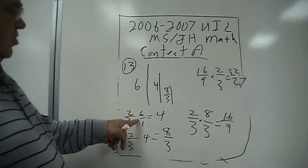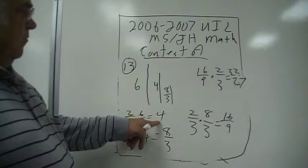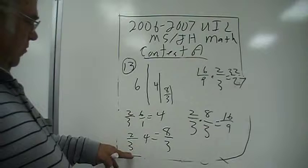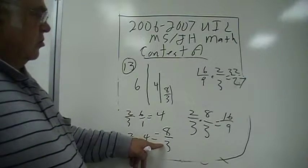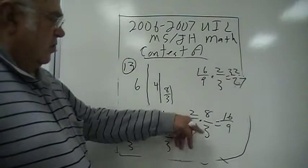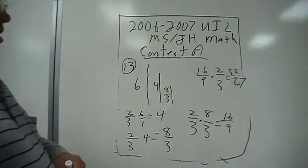So you've got two-thirds of six, that's four. You need two-thirds of four, would be eight-thirds, and then two-thirds of eight-thirds would be 16 over nine. Three times three is nine.